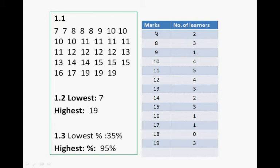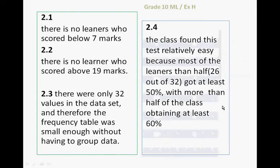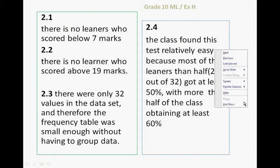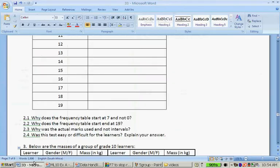So why does it not start at 0? Because there are no learners who scored below 7 marks. Why are there not more than 19? Because there are no learners who scored above 19.